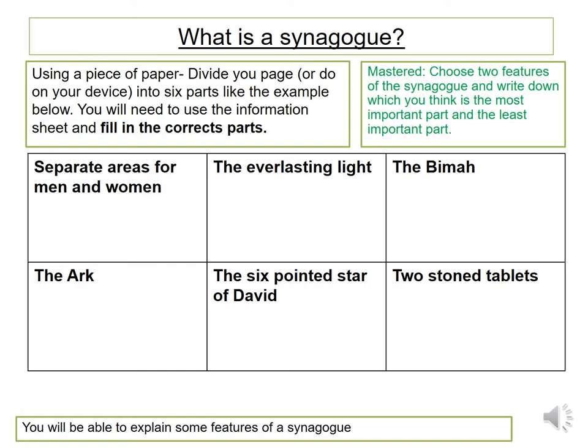Moving on now, I would like you to use a piece of paper and divide your page into six parts like the example below. I would like you to use the information sheet that is provided and fill in the correct parts for each section. Once again, if you would like to push yourself further, attempt the master question: choose two features of the synagogue and write down which you think is the most important part and the least important part.